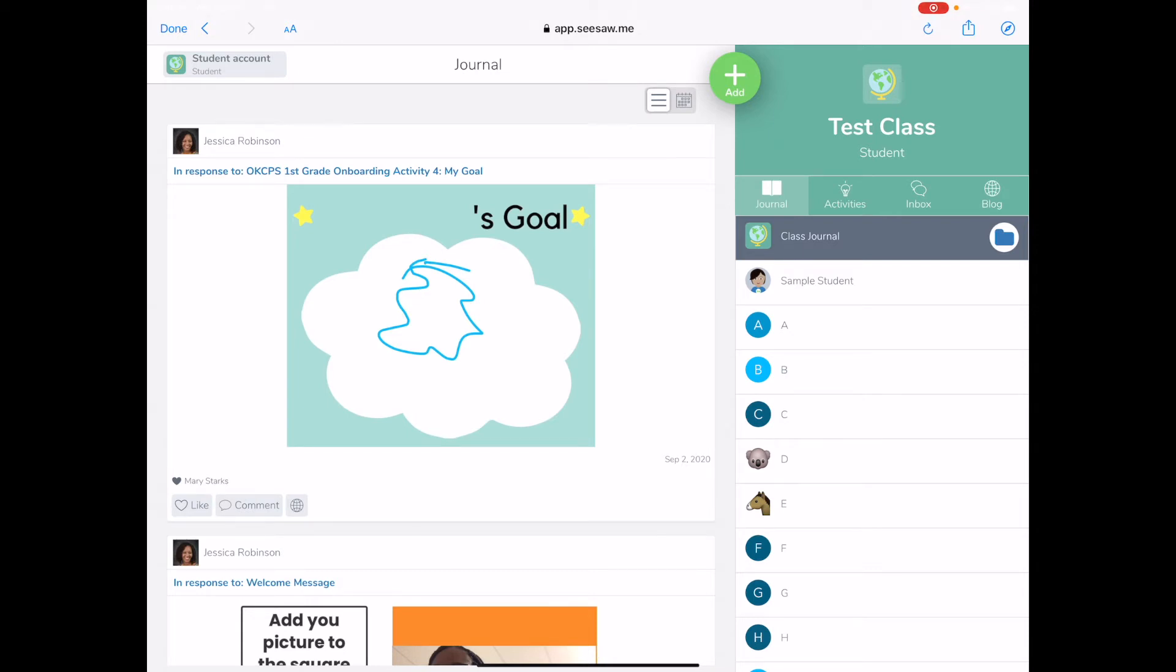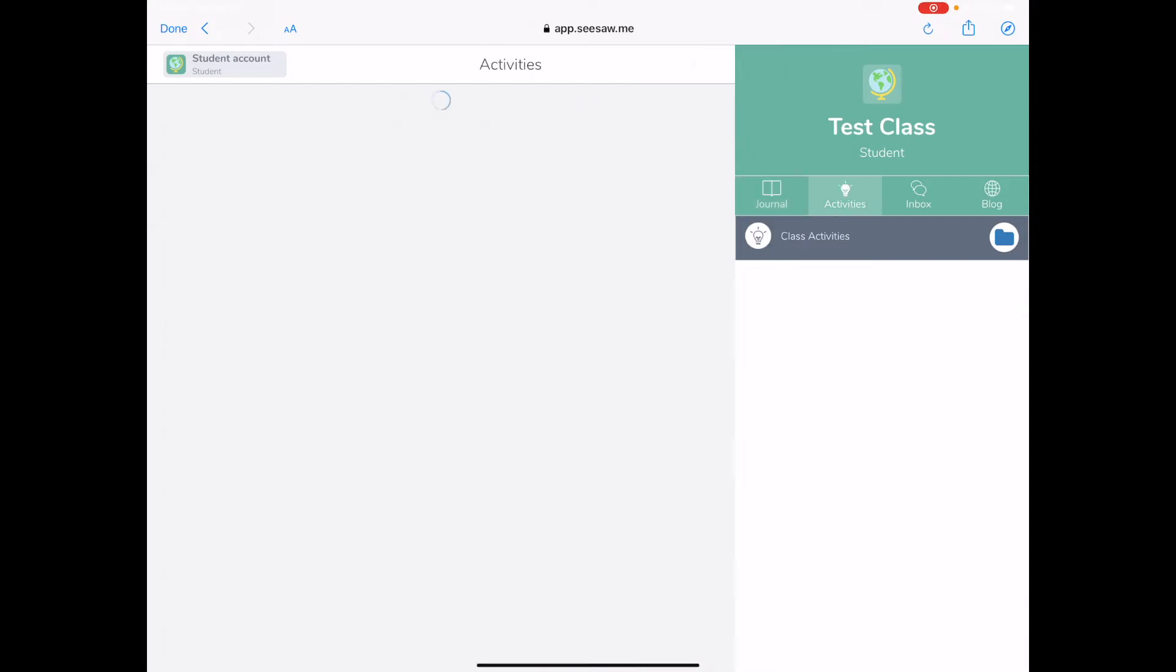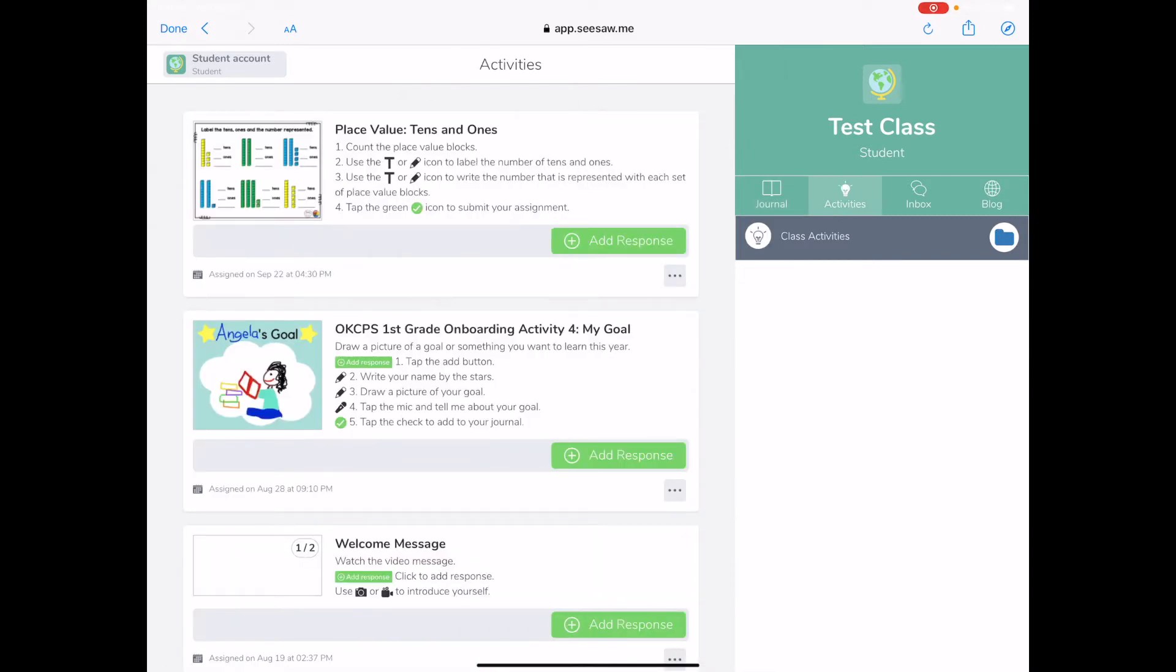It takes me to my class journal, but I need to access my activities. So I am going to press the light bulb that says activities, and I can see all of the activities that I have not responded to as a student.